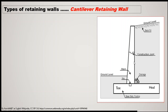This retaining wall retains the backfill shown behind the wall; the ground level is above. To drain out water — if water is present in the backfill or due to any connectivity of water — that water will be drained out through the drainage provision. In the stem, if the height of the stem is greater, then we have to provide construction joints.